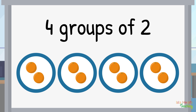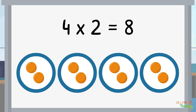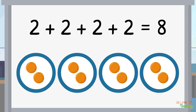How many oranges are there in total? We can skip count by 2's to find out: 2, 4, 6, 8. So the answer is 4 groups of 2 equals 8. It can also be written as 4 times 2 equals 8. Remember, x is the symbol for multiplication. It can also be written as 2 plus 2 plus 2 plus 2 equals 8.